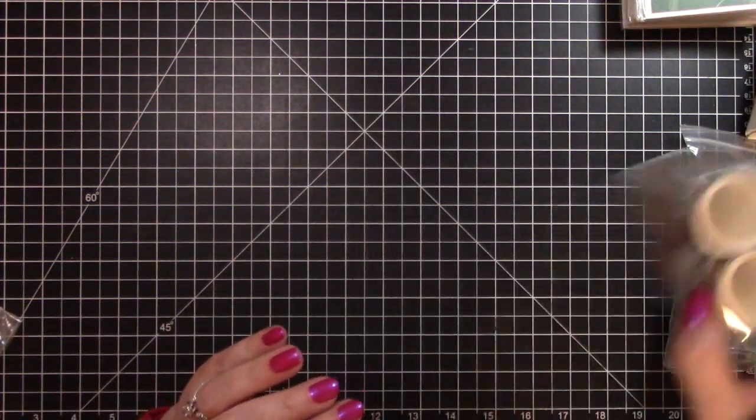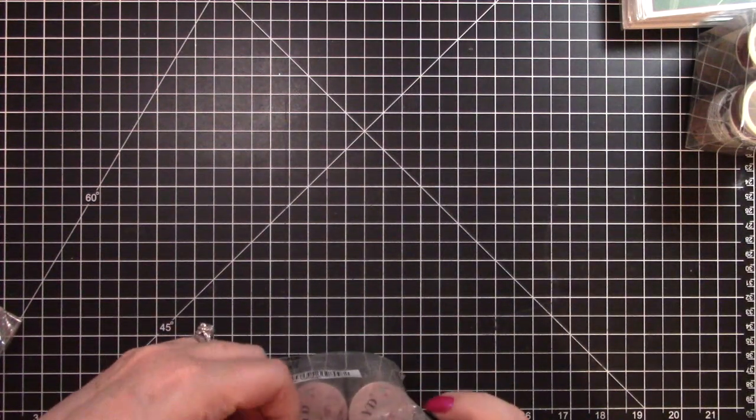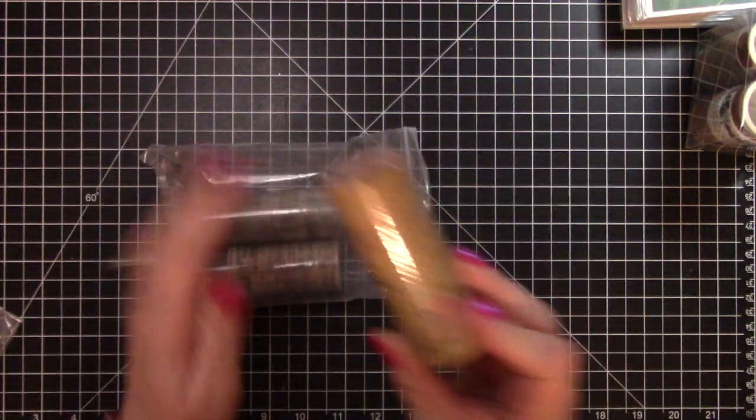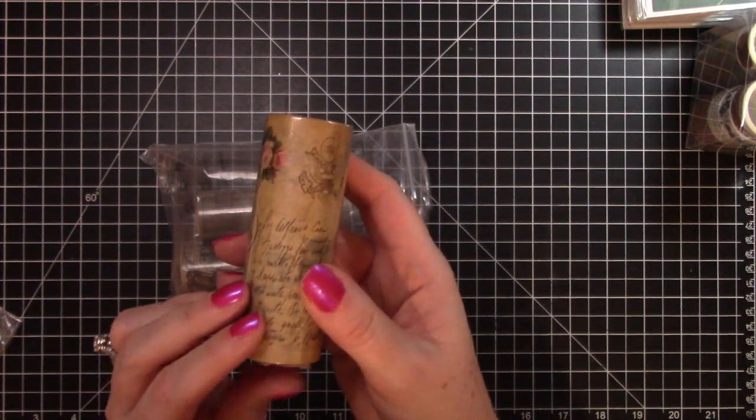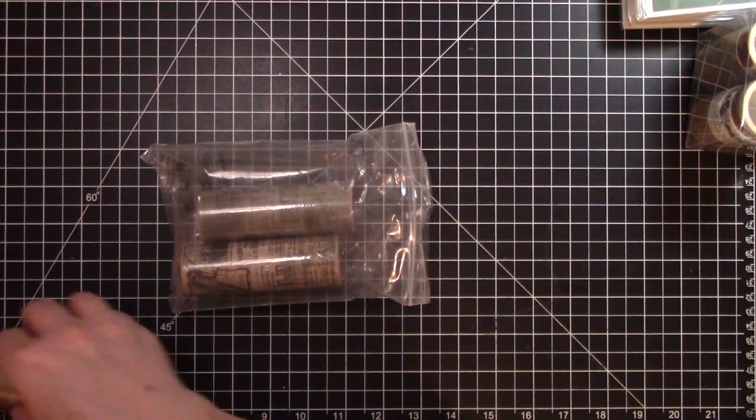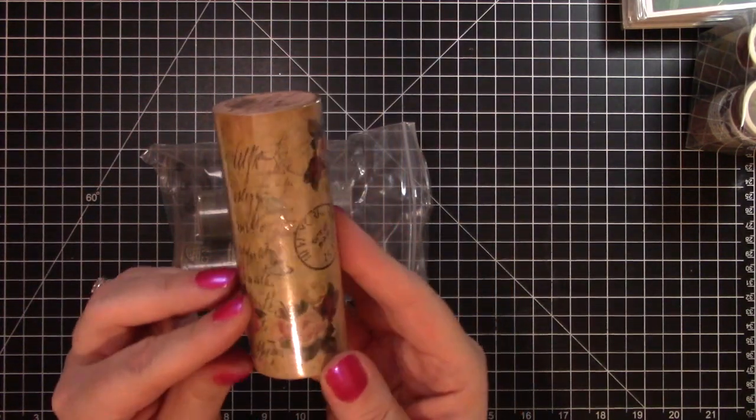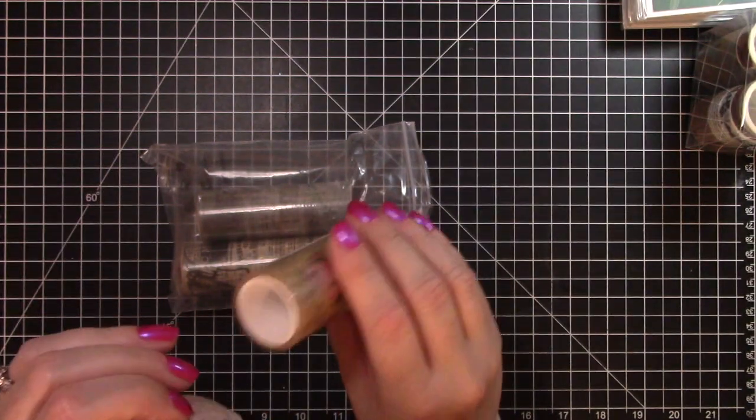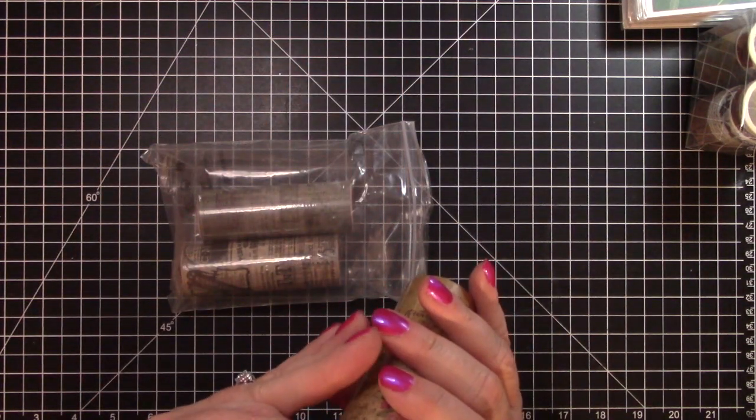And then I ordered these washi tapes. I thought these would be so much fun to play with. They are huge rolls—the width of the roll, let's see, it is four inches. And they are so pretty. That's what they say on the end and that piece is made of washi tape and that would be pretty as ephemera on something.